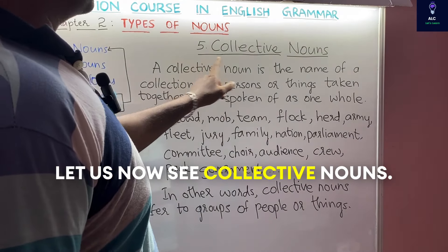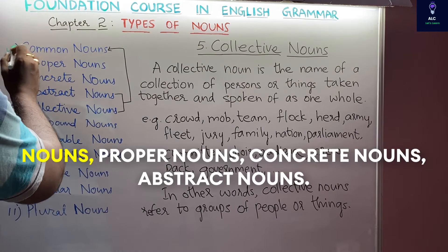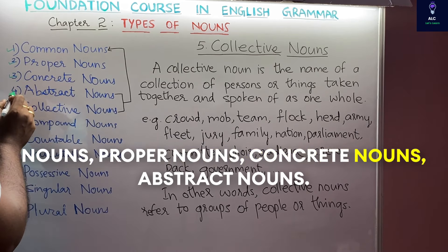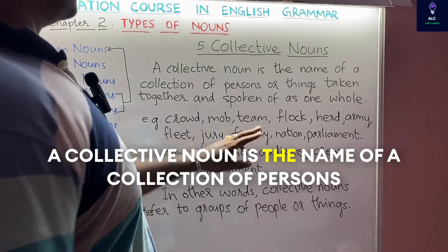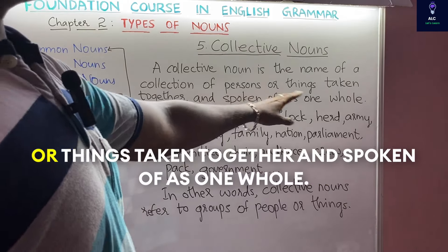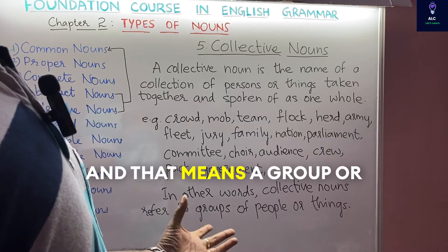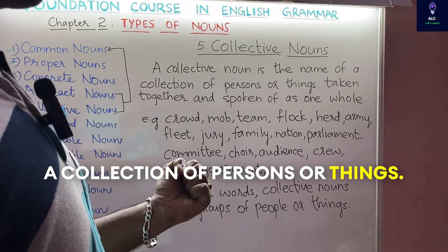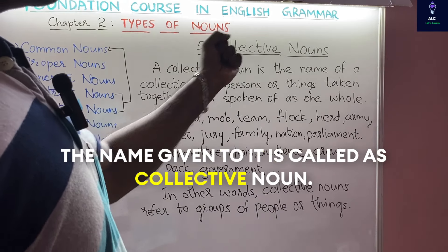Let us now see collective nouns — number 5. So far we have seen common nouns, proper nouns, concrete nouns, and abstract nouns. A collective noun is the name of a collection of persons or things taken together and spoken of as one whole — that is, a group or collection of persons or things. The name given to it is called a collective noun.